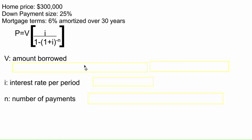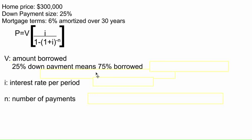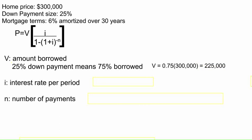If we have a 25% down payment, that means the remainder, 75%, is going to be borrowed. So what we've got to figure out is what is 75% of $300,000. You multiply 0.75 times $300,000, and what you get is $225,000. That's the amount we're actually going to borrow — most of the home price, but not all, because some of it we already have for a down payment.